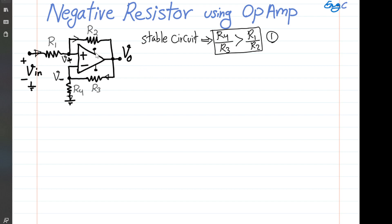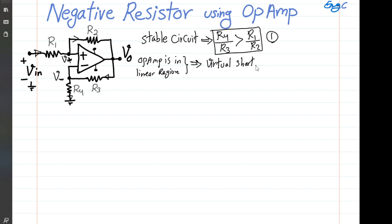We assume the op-amp is ideal, and the positive and negative supply voltages are properly selected so that the op-amp remains in the linear region and is not saturated. With a stable circuit where negative feedback is more powerful, the virtual short condition is valid — meaning the voltage at the positive input terminal equals the voltage at the negative input terminal.